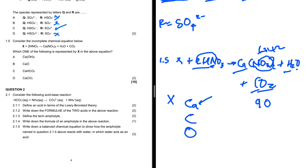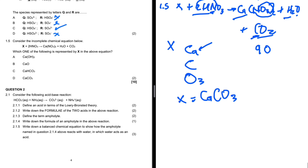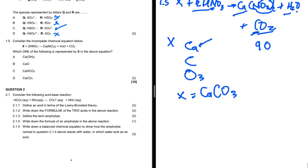On the right we have nine oxygens total, and on the left we have six from 2HNO₃. The difference is three, meaning X should have three oxygens. That leaves us with CaCO₃, which is option D. Therefore the answer to 1.5 is D.